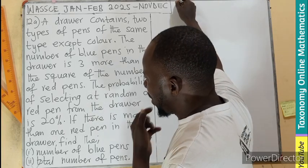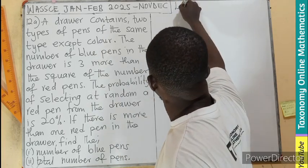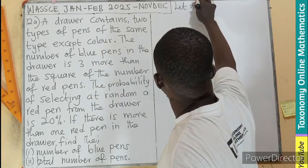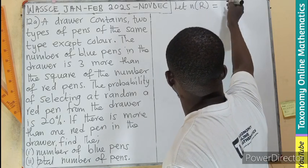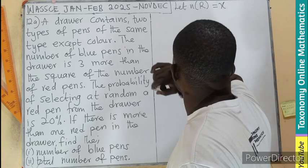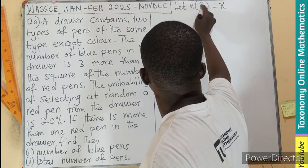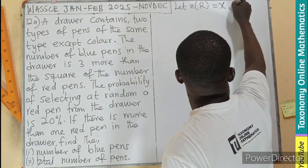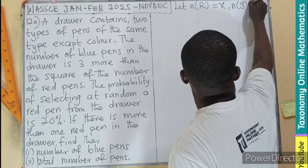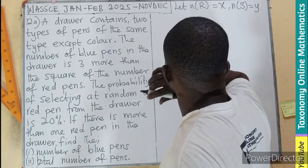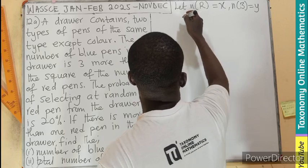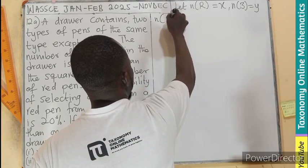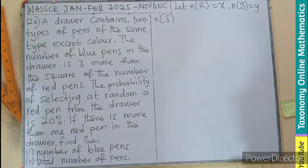Let's see. If we are going to have red, let's number of red. This, let's represent this by X. Then we are going to have the number of blue by Y. The probability, what again do we need? We need the total sample. So number of S, which is the total sample.